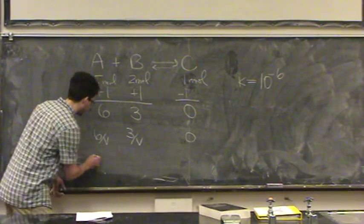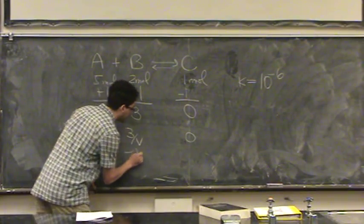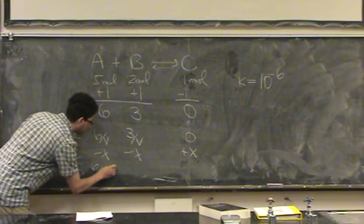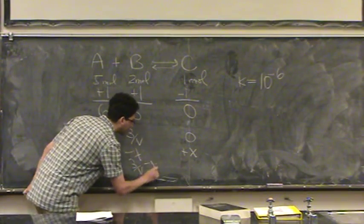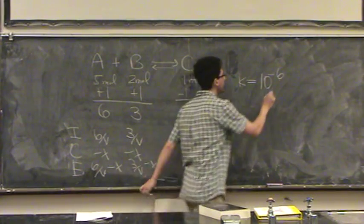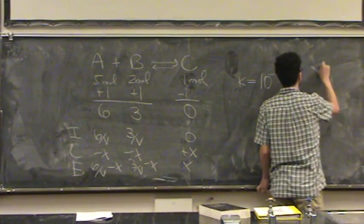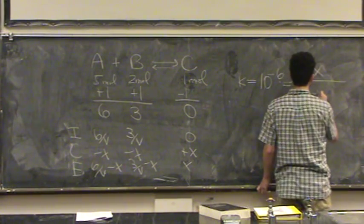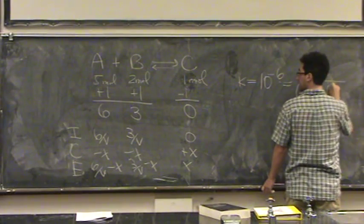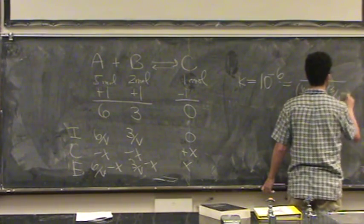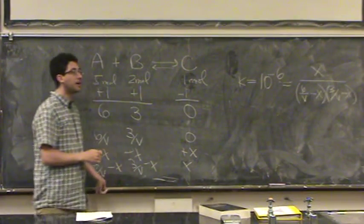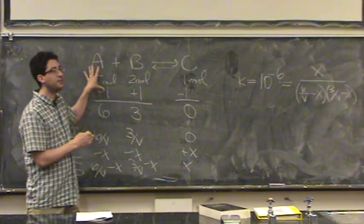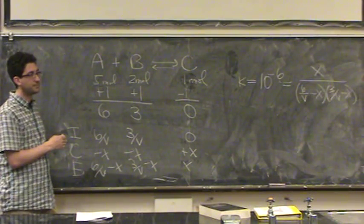So it goes minus X, minus X, and plus X. Or, 6 over the volume, minus X, 3 over the volume, minus X, and X. So K, now, is products X, over the reactants, 6 over V, minus X, times 3 over V, minus X. See how the problem changes a little bit now? Because the only thing that changed was K. The setup was all, I gave you the same initial information.